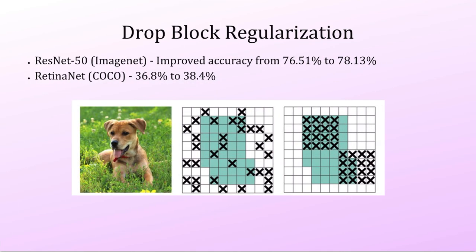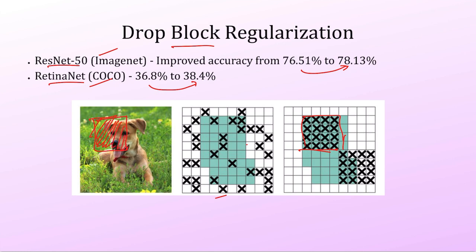Drop block was evaluated on ImageNet classification with ResNet-50 and on COCO with RetinaNet. Accuracy improved by approximately 2% in both cases compared to using regular dropout. So drop block works better than randomly dropping individual activations — instead, a blocked spatial portion is dropped at a time.